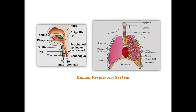Before going into details of the human respiratory system, we know that our body requires energy to perform various activities. As we get oxygen into our body, there are various catabolic reactions involving breakdown of food, releasing energy in the cells, which is used for performing various activities. Carbon dioxide is also released in the process. This is why respiratory organs are important — gaseous exchange allows our body to get energy to perform various activities.